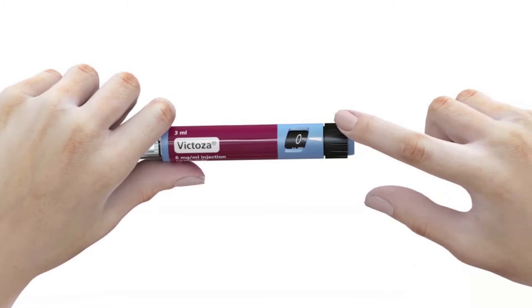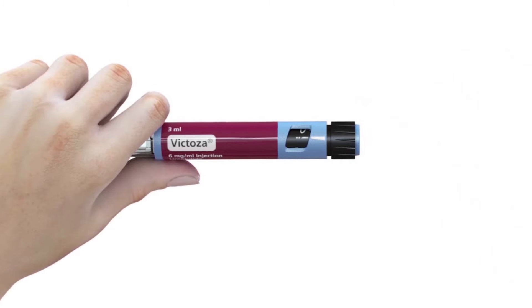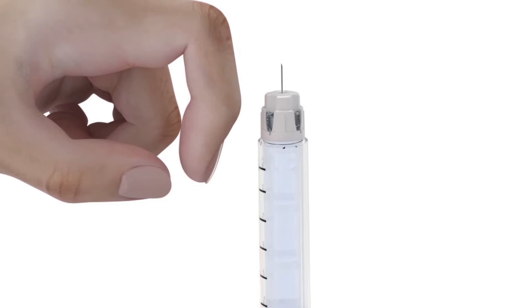The first time you use a new Victoza pen, check the flow in the pen with an air shot. Turn the dose selector until the flow check symbol lines up with the dose pointer.